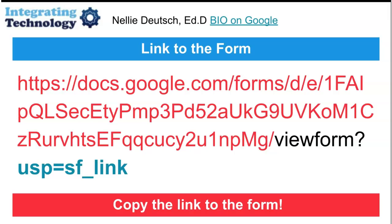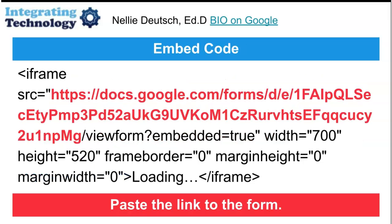It says "link" in green. Right now it's "view form" — you're going to change that and remove the "usp=sf_link" part. You're going to remove that, and this is how it's done. Take the embed code, paste the link. Notice I have a link there that I pasted, and notice there's the embed.